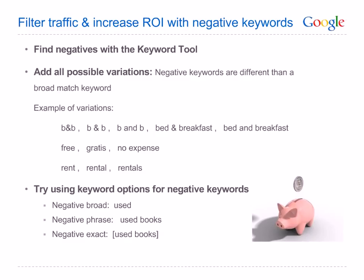Here are some examples of negative variations. If your website advertises hotels but not bed and breakfasts, you should exclude the full list: B&B, b and b, and bed and breakfast — both with the word 'and' and the symbol. If you want to filter out clicks from users looking for a free service, exclude: free, gratis, no expense, no cost. If you were a real estate agent selling homes, you may want to exclude clicks from users looking to rent homes — in this case you could exclude rent, rental, rentals. Keyword matching options can also be used for negative keywords to control how you filter unwanted clicks.